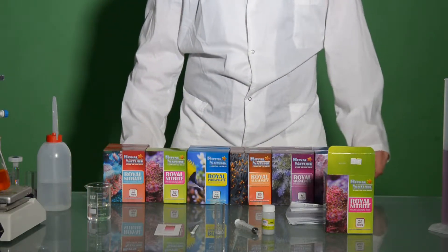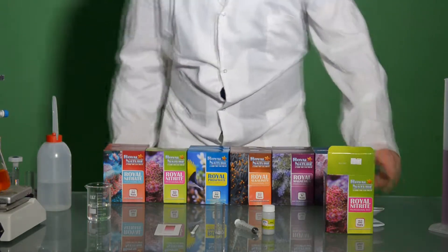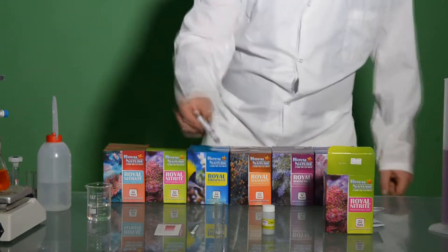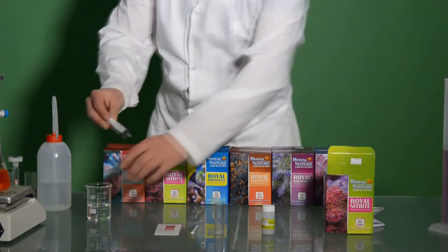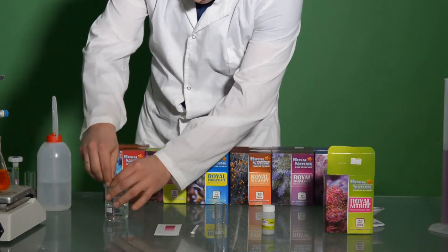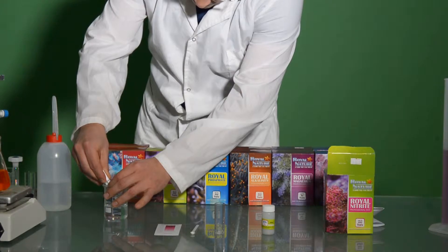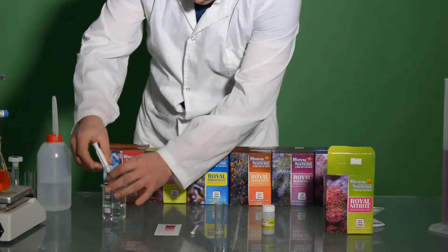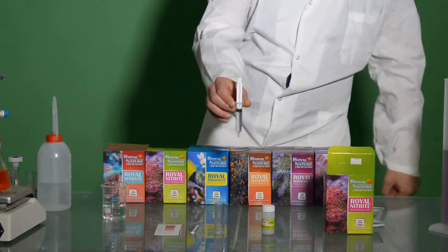So let's start with the test. First we'll take seawater where we don't expect to find any levels of nitrates. Using the 5ml syringe, we'll add 5ml of aquarium water to the test vial.